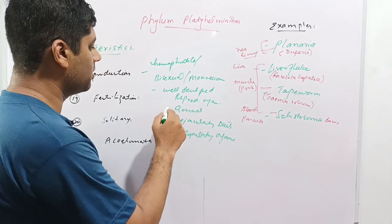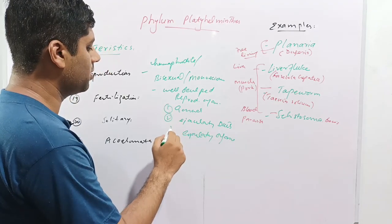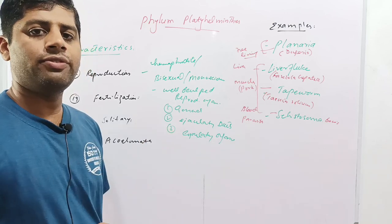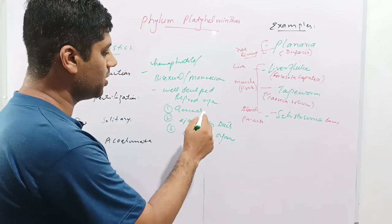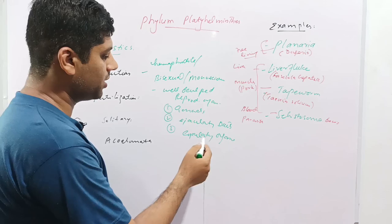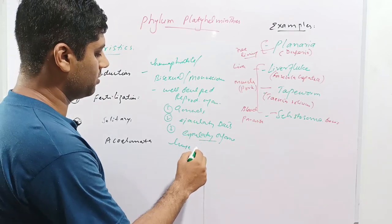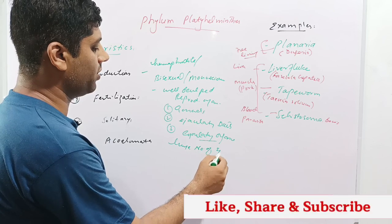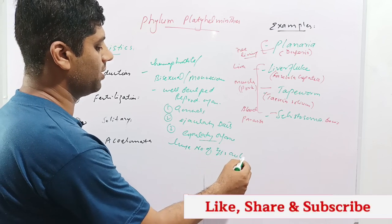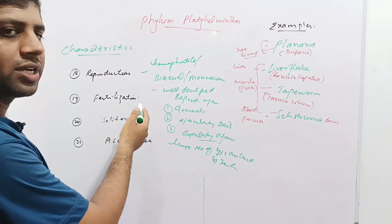They have well-developed reproductive organs in the form of gonads, ejaculatory ducts, and copulatory organs. In Platyhelminthes, each animal has both male and female reproductive organs. The females lay a huge number of eggs.